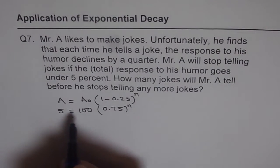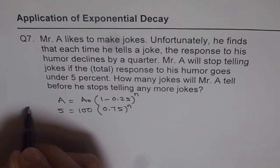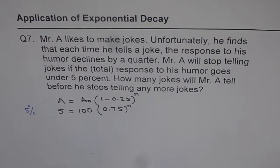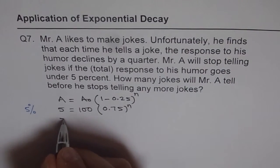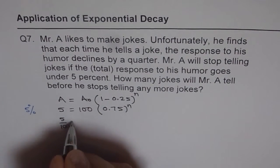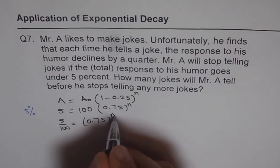So 5 over 100 is 5%. So this is 5%. 5 over 100 is equal to 0.75 to the power of n.